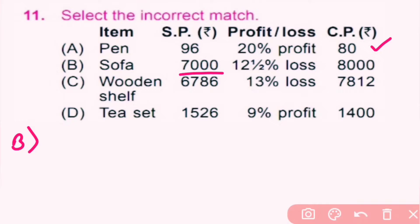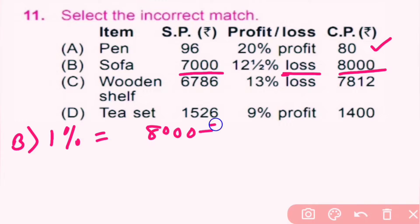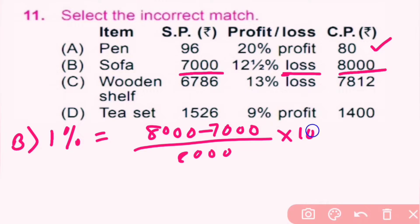Now we will solve option B. Sell price is 7,000 and cost price is 8,000, meaning cost price is more than sell price, so there is a loss. Loss percentage equals cost price minus sale price divided by cost price into 100.